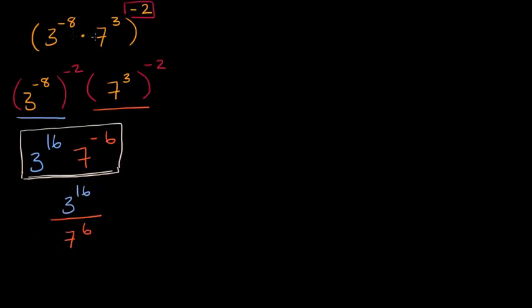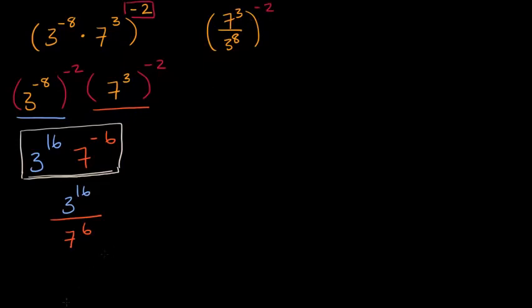But these two are equivalent. And there are other ways you could have tackled this. You could have said that three to the negative eight is the same thing as one over three to the eighth, so this is the same thing as seven to the third over three to the eighth. Then you're raising that to the negative two, in which case you would raise the numerator to the negative two and the denominator to the negative two. But you would have gotten to the exact same place.